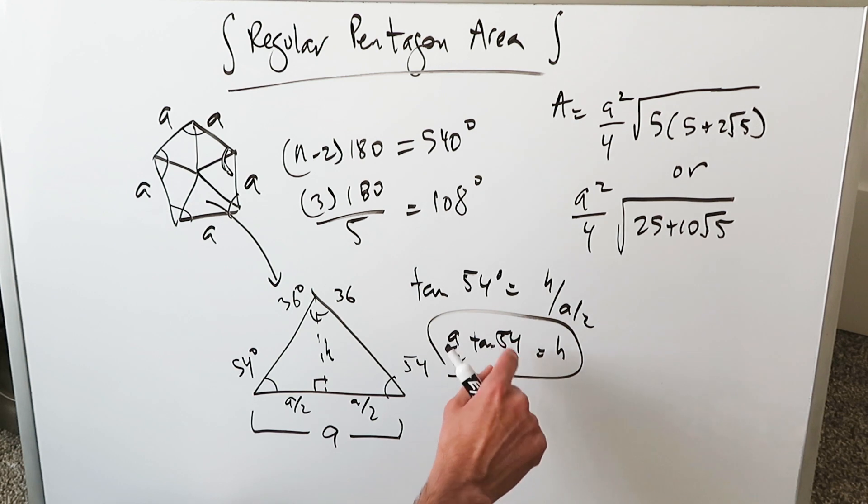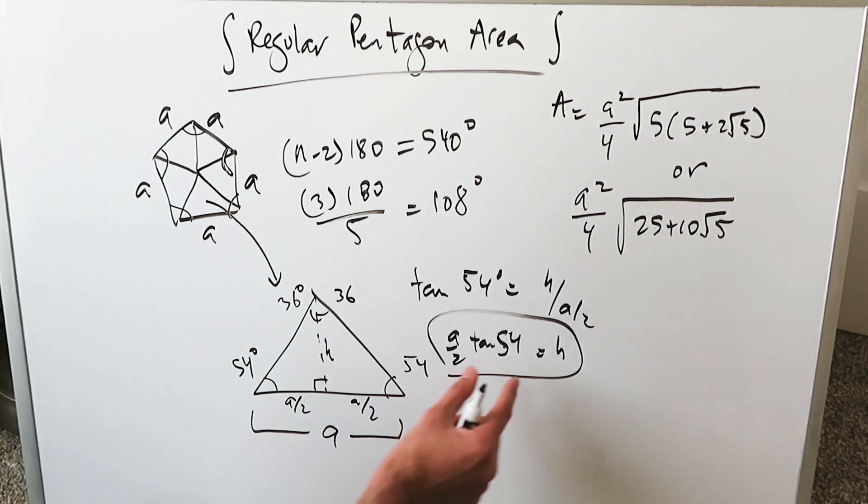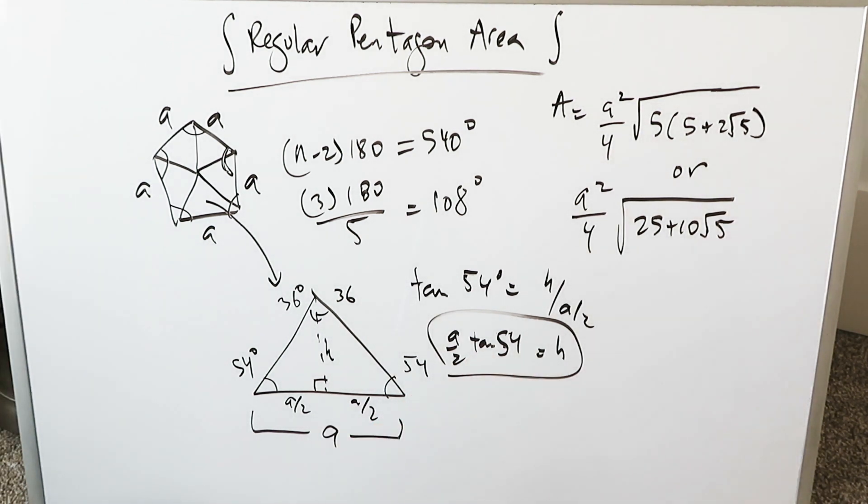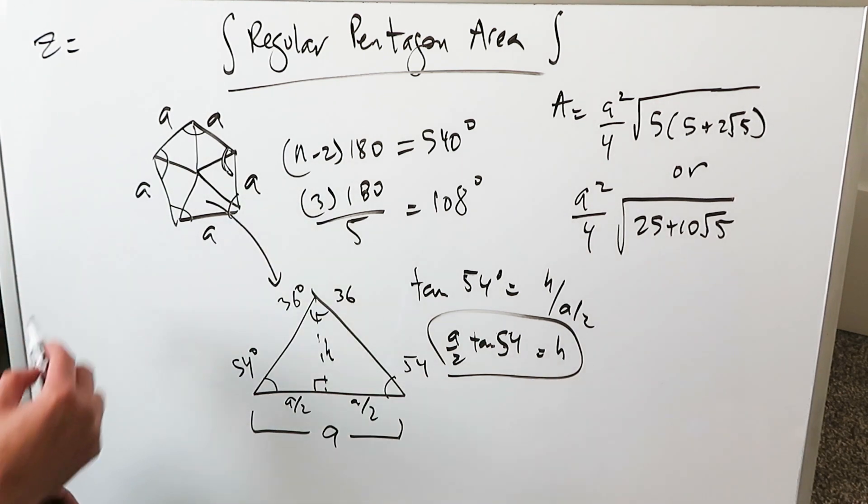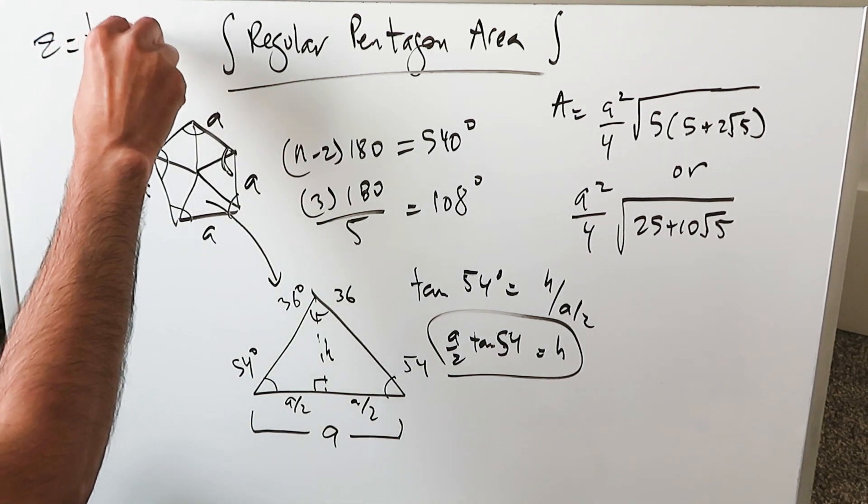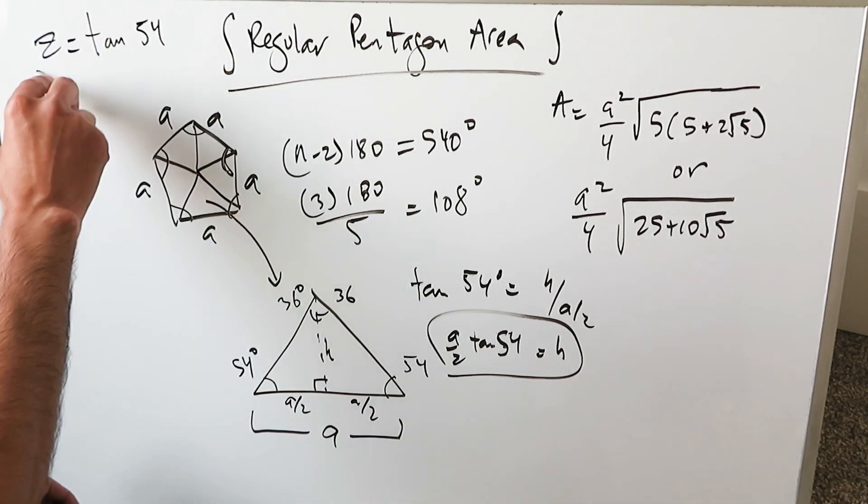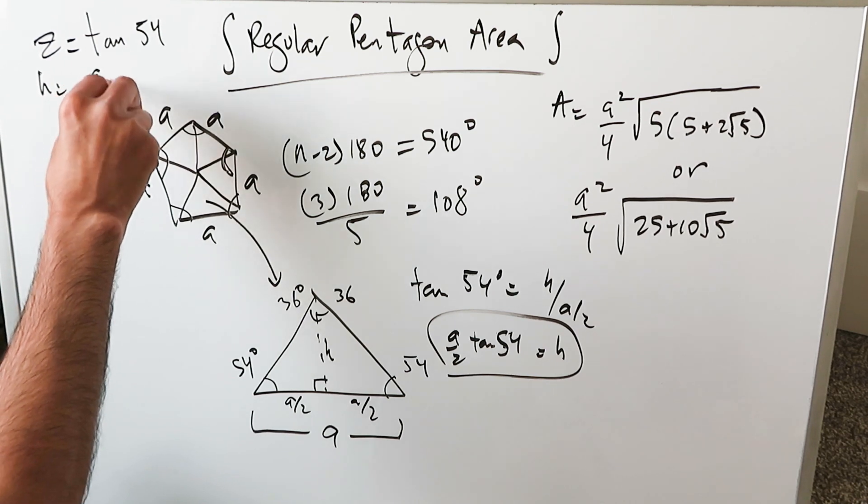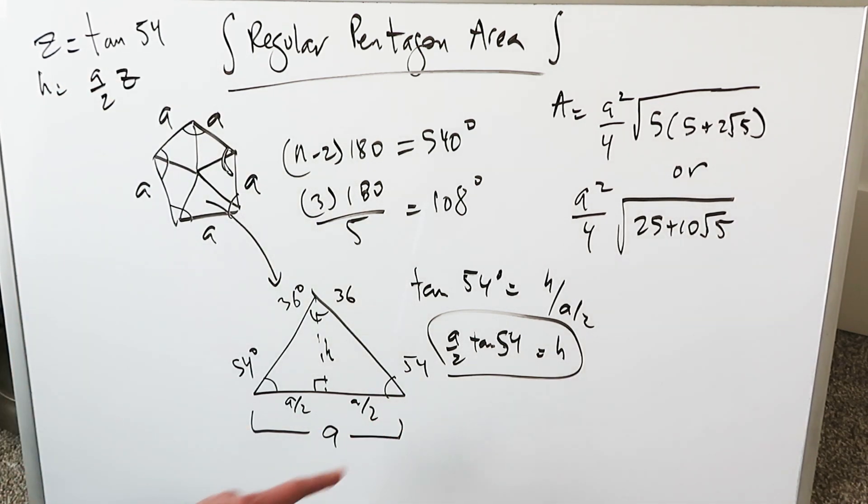Don't compute this because it's going to get messy and you have to run this through the integral. This is what I have: A over 2 tan 54. But I don't want to keep writing tan 54 in my integral procedure. You have to do a substitution. Z is equal to tan 54. Now H is equal to A over 2 Z. That's what you have.